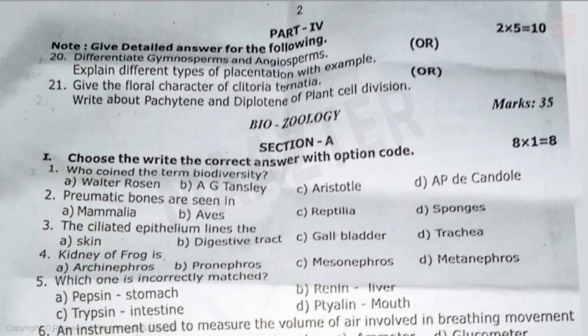For the five-mark section, five more questions are given — either option A or option B. First, differentiate gymnosperms and angiosperms. Next, explain the different types of placentation with examples. Next, give the floral characters of Clitoria ternatea. Write about pachytene and diplotene stages of plant cell division.